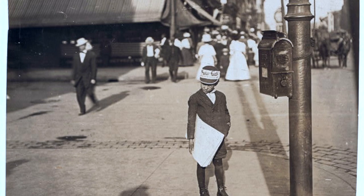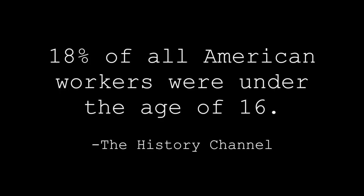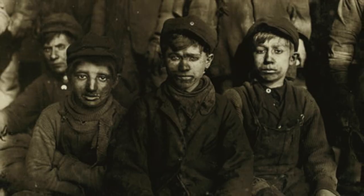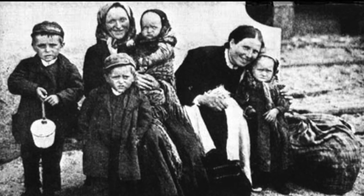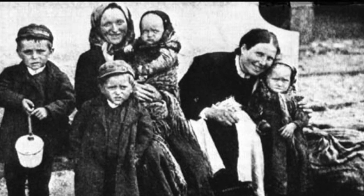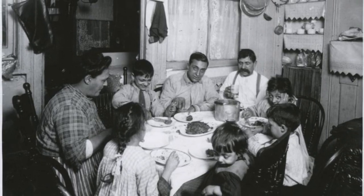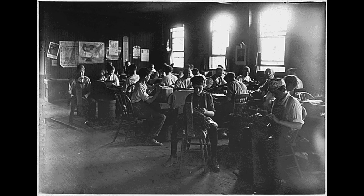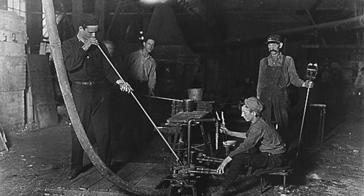Child labor was a widespread problem during the Industrial Revolution across America. In 1900, 18% of all American workers were under the age of 16. This high number of child laborers was partially prompted by the rapid influx of immigrants during the time period. Immigrant families were often very poor, and the family's children would need to work to help support the family. Children would also work for lower wages, which incentivized the profit-minded factory owners to hire them.